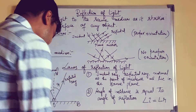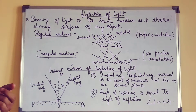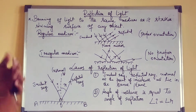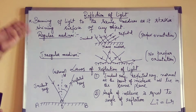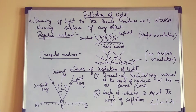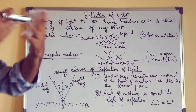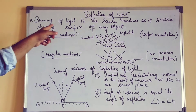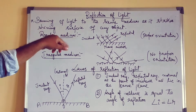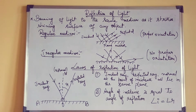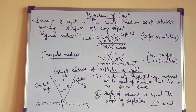As I was explaining the properties or the basic terms of light — that is ray and beam — the next concept we have to study is the reflection of light. From here the syllabus will start and it is very important. So what exactly is reflection? Bimba, Pratipimba — that is what is going to happen. Bouncing of light back to the same medium when it strikes any shining surface of any object — it is called reflection.